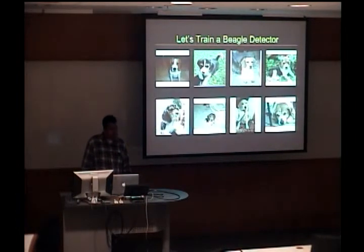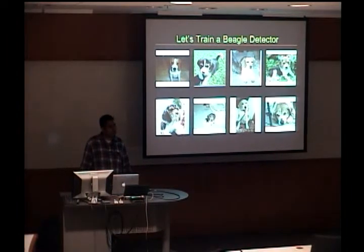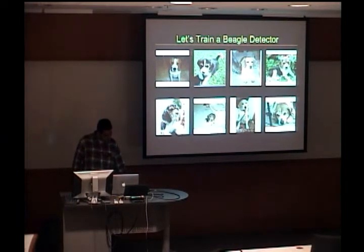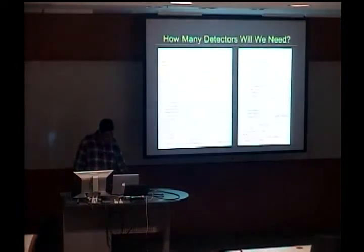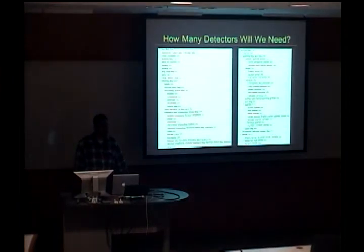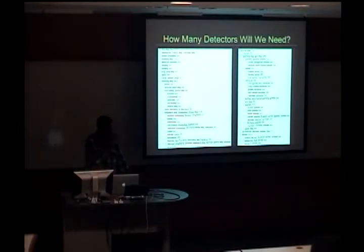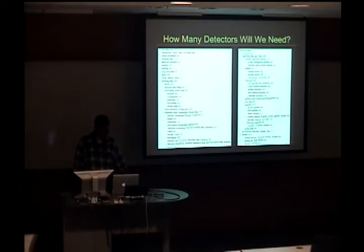One thing we could do is make the problem easier by saying, let's train a beagle detector. Instead of all dogs, we're just trying to find beagles. The hope is that this should be an easier problem because beagles generally look a certain way. But the problem now is that you just need a huge number of detectors, because beagles are one type of dog. Here I'm showing from ImageNet the dog category — two screens of different types of dogs — and this list just goes on and on. It's not clear how you can scale a process where you have to train detectors for every single type of thing.